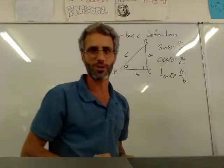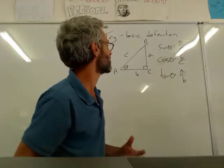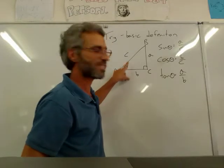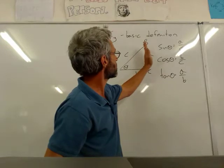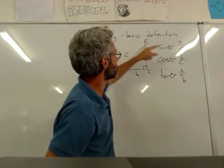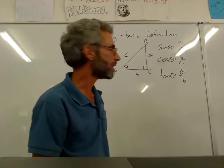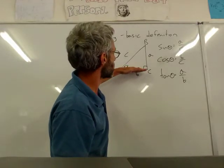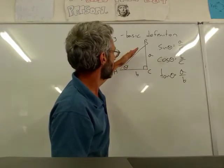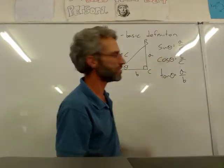And I've written here the definition for you. It took us a while to get last lesson. So sine theta, sine this angle, is the opposite side divided by hypotenuse. It's A over C. Cosine theta, it's the adjacent side to the hypotenuse divided by the hypotenuse, B over C.